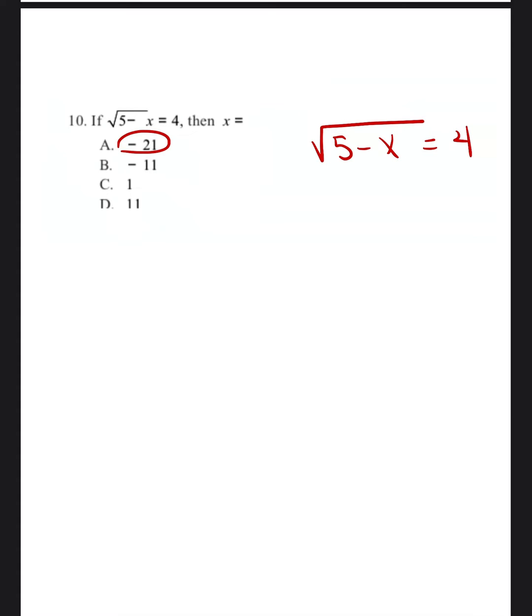So let's take negative 21, for example. So instead of writing 5 minus x, we're going to do 5 minus negative 21 is equal to 4. Anytime you're minusing negative, that becomes a positive, an addition sign. So 5 plus 21 is 26. So the square root of 26 is equal to 4. There is no perfect square root of 26. So we know that it's not going to be equal to a whole number 4. So we know that A is not the answer.